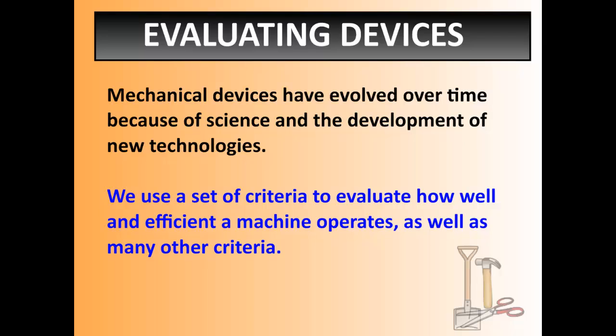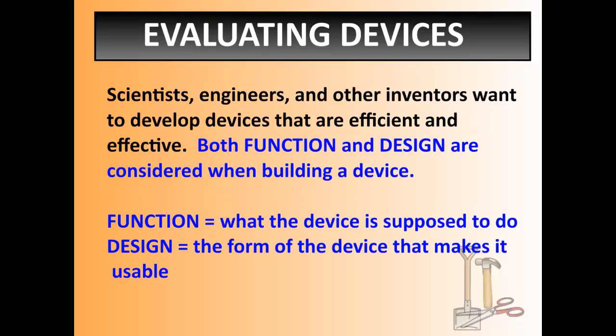As things have changed over the years and we've decided to use newer, faster, smaller, slicker devices, we have developed a set of criteria to evaluate how well and how efficiently a machine operates. Scientists, engineers, and inventors who want to develop devices have to think of two things: they have to think of both function and design whenever they build a device. Function is what the device is supposed to do, and design is the form of the device that makes it usable.